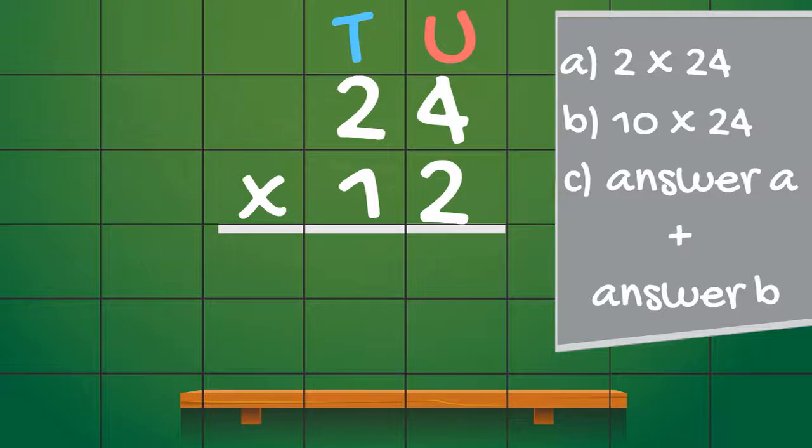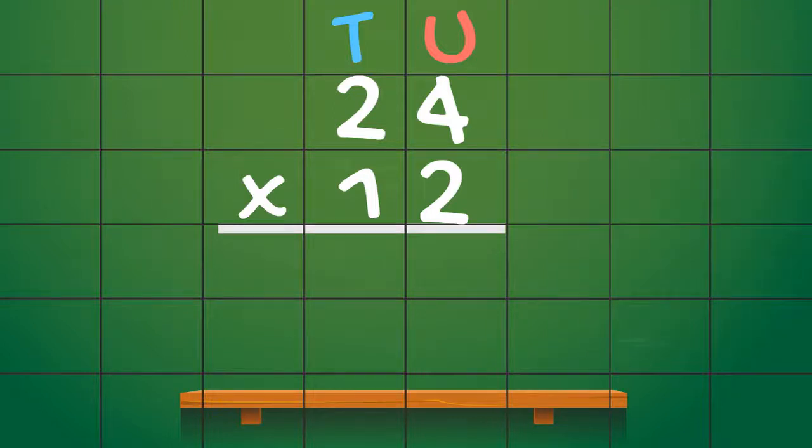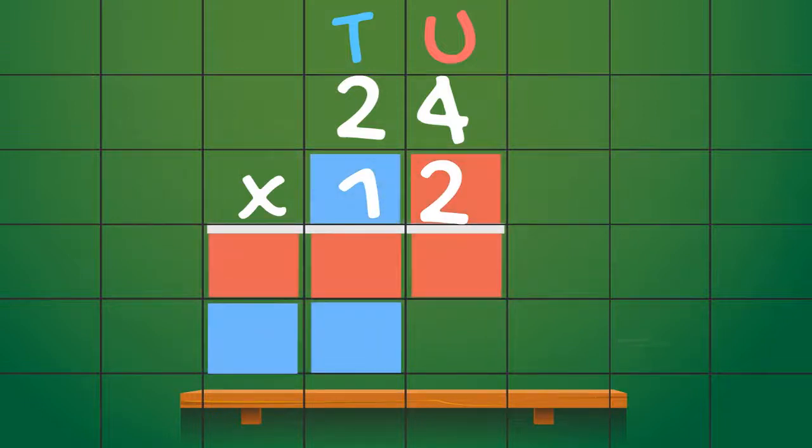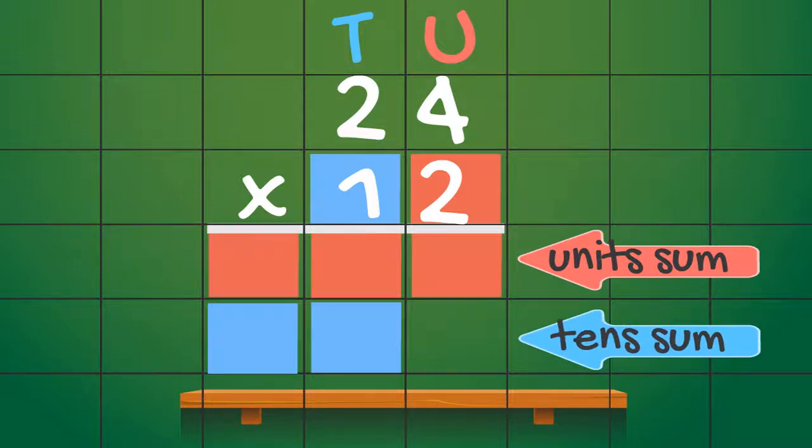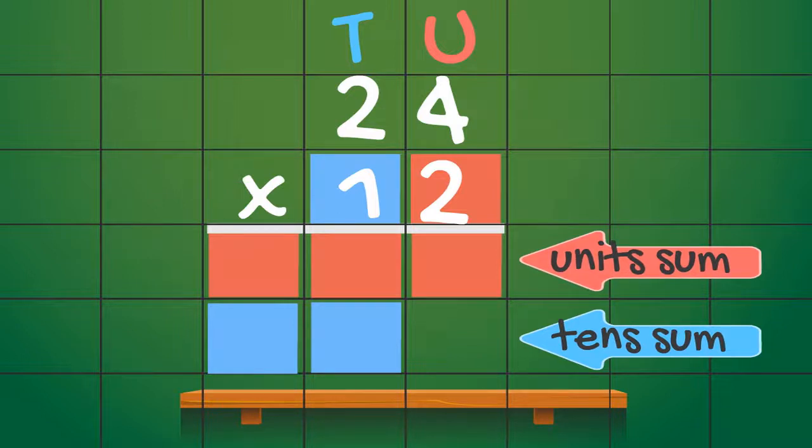I know what you're thinking, how are we supposed to keep all those sums separate without getting confused? Well the answer is color coding. Color coding helps to separate the two multiplication sums so that we don't get confused. It looks like this. We color the unit sum and answer space red. We color the tens sum and answer space blue. You might have noticed that there's a blank space on the blue line under the units. I'll explain this to you later on.